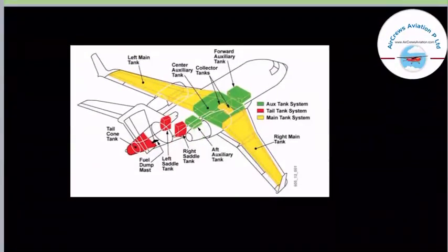Here is another picture showing the location of fuel tanks in an aircraft. The area highlighted in green describes the auxiliary tank system. The area highlighted in red is the tail tank system, and the area highlighted in yellow generally represents the main tank system.